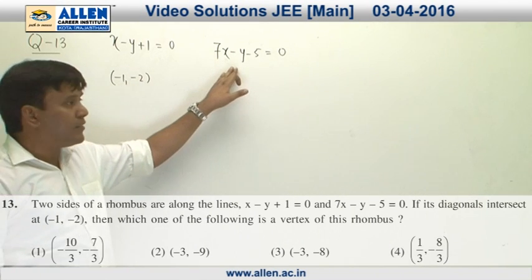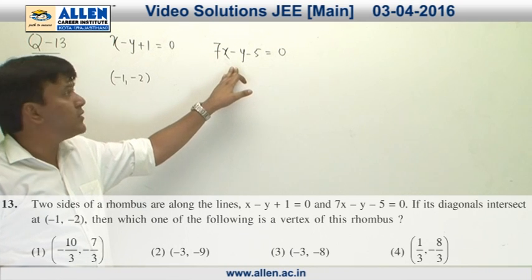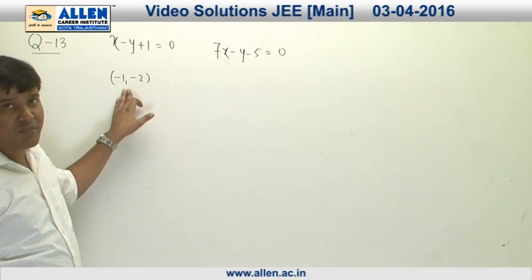In question number 13, these two are the equations of the sides of the rhombus and this is the point of intersection of the diagonals.